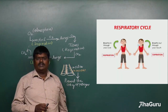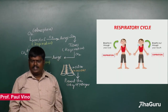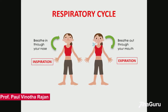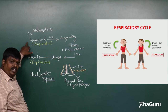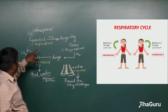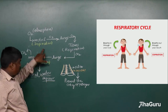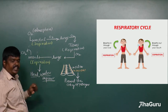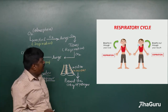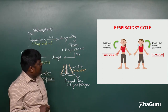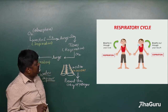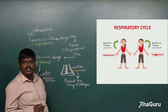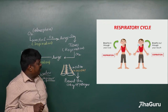Next we are going to talk about the respiratory cycle. We are taking in oxygen and giving out carbon dioxide. When you take in oxygen, that is called inspiration. When you give out carbon dioxide, that is called expiration. The respiratory cycle includes inspiration followed by expiration — it is a continuous cycle.